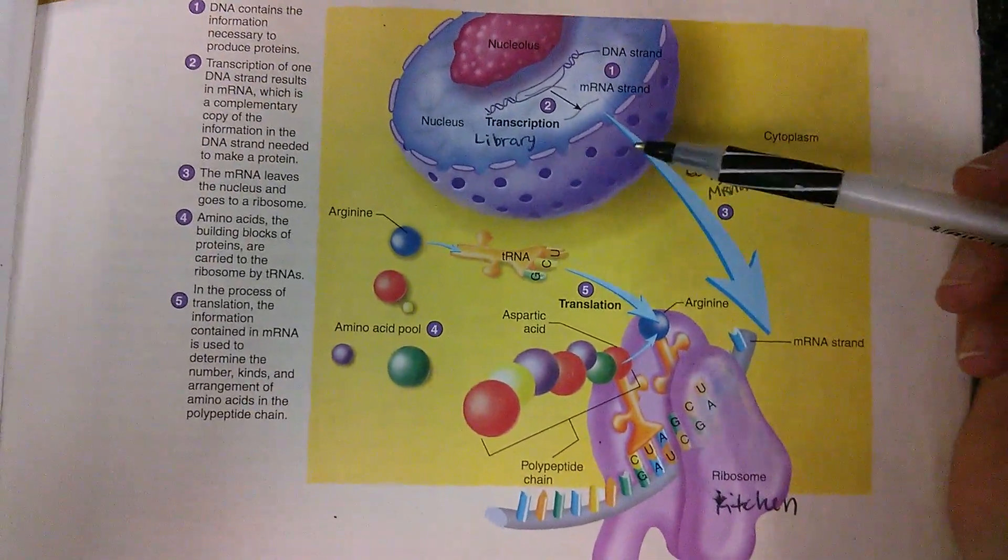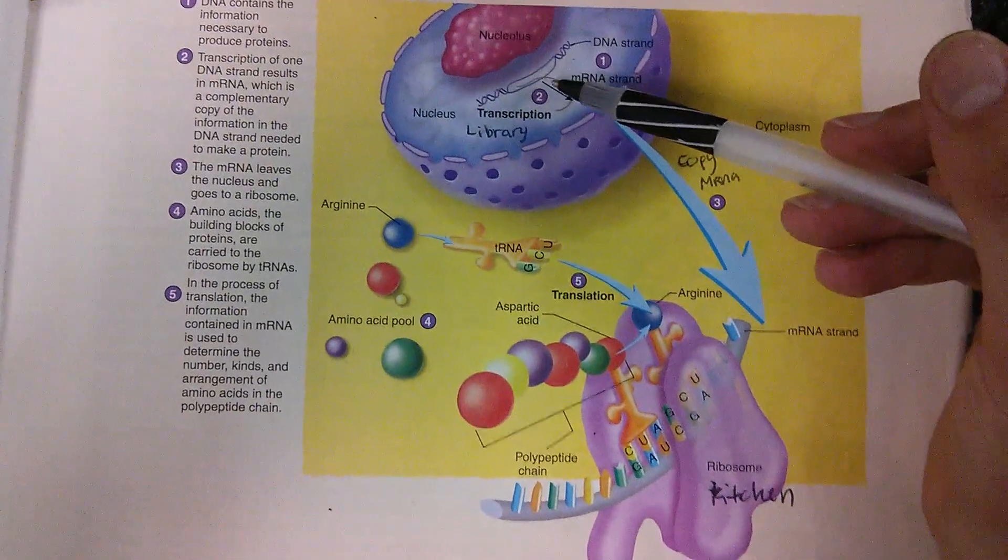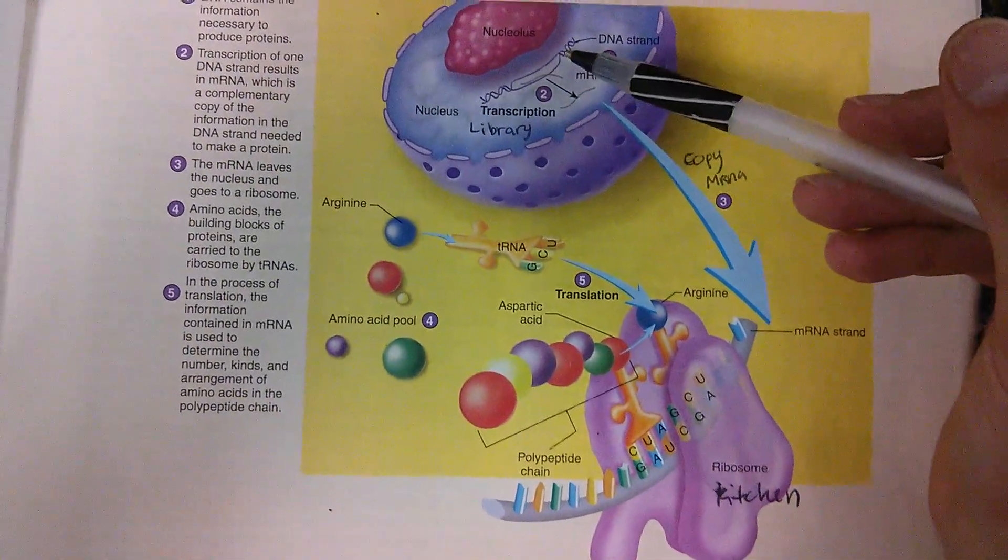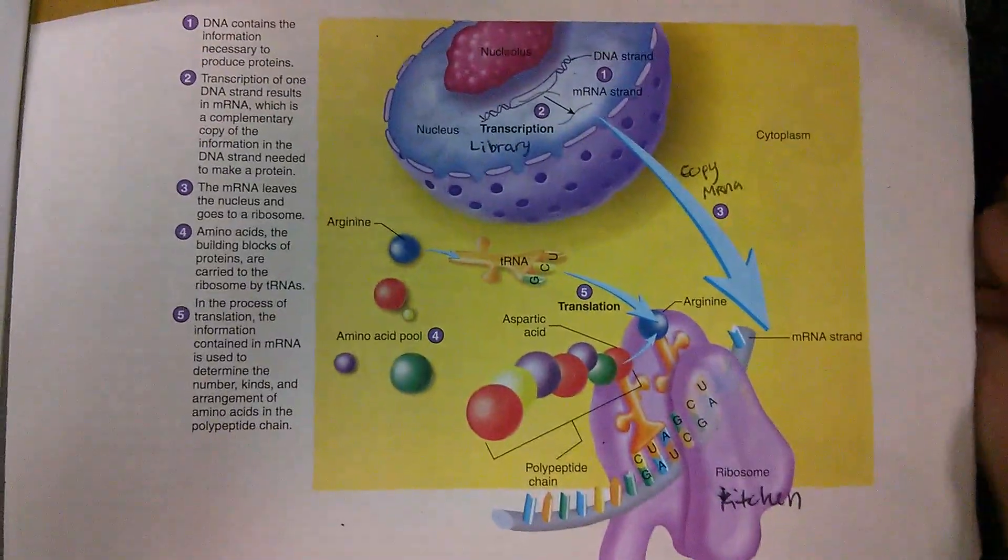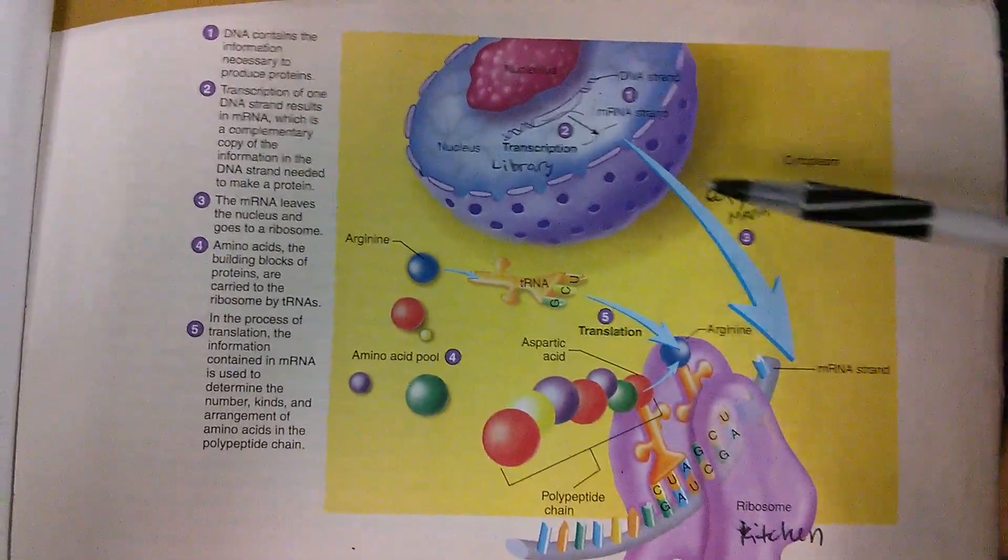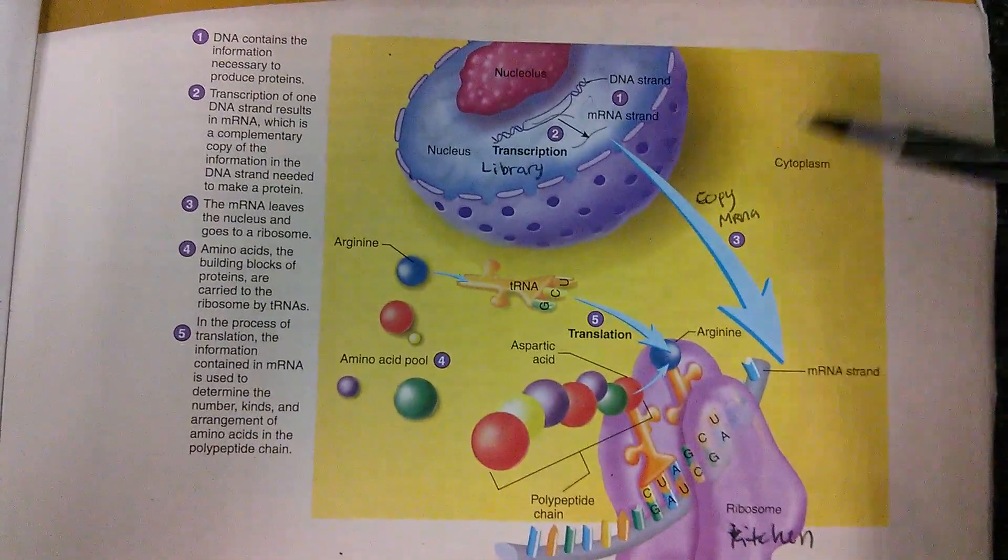So I'm going to call the DNA here maybe a book that you want to get some information from. Now let's pretend this is a cookbook. If you want to make a cake or something, you don't need all the information in the entire cookbook. You just need a certain recipe.